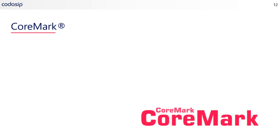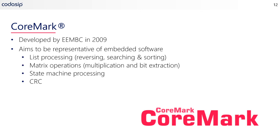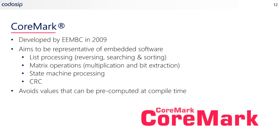The more modern alternative is CoreMark. This was developed by EEMBC in 2009, and it aims to be representative of embedded software. There are four main areas it covers: list processing, including reversing, searching and sorting; matrix operations, including multiplication and bit extraction; state machine processing; and cyclic redundancy checking. CoreMark avoids values that can be pre-computed at compile time and mandatorily has a standardized approach to reporting.